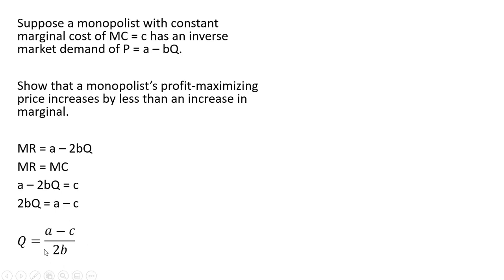To get the profit maximizing price, we're going to take this result here and plug it back into the inverse market demand. So substituting out Q, and the B's here will cancel in the numerator and denominator, and distributing this minus sign. That is the profit maximizing price for the monopolist.